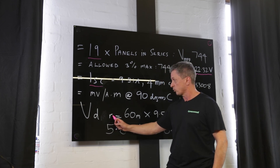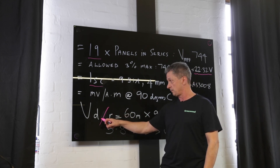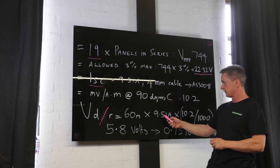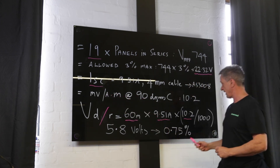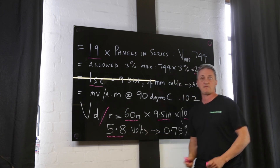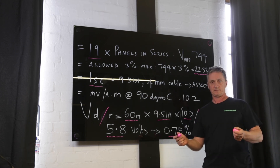So the Volt Drop — remember Volt Drop and rise are the same mathematically, it just depends on what you're trying to ascertain. We have a 60-metre run, a single string at 9.51 amps, and a millivolt per amp metre factor of 10.2. Taking that over a thousand gives us 5.8 volts of Volt Drop, which is 0.75% — well under the 3% maximum. Thanks very much for watching our presentation on DC Volt Drop calculations — a very important area that many installers don't look at closely. Please subscribe.